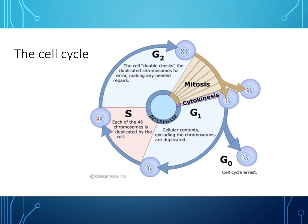Let's have a look at the cell cycle. We have mitosis — the M phase — cytokinesis, G1 phase, G0 cell cycle arrest, the S phase, and the G2. The G1 phase is where cellular contents excluding chromosomes are duplicated. G0 is where the cell cycle is arrested. The S phase is where each of the 46 chromosomes is duplicated. G2 is where the cell double-checks the duplication of chromosomes for errors.